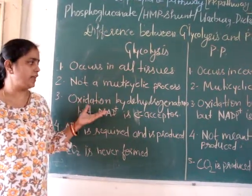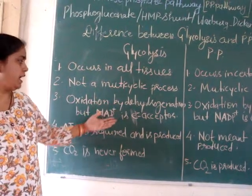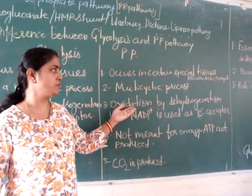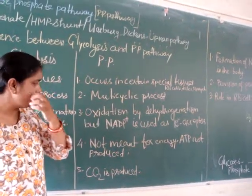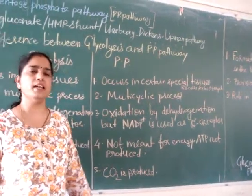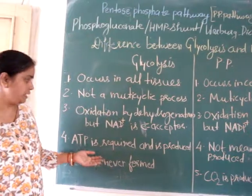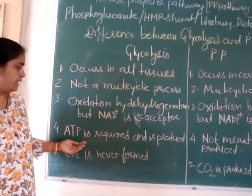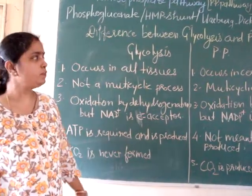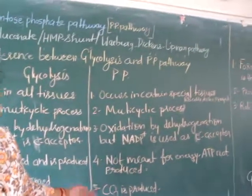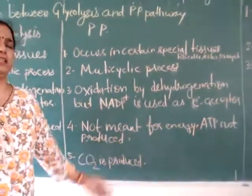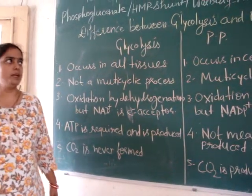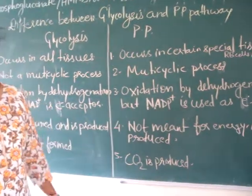In the glycolysis pathway, oxidation is done by dehydrogenation but NADP+ is used as the electron acceptor. Another important point is that in the glycolysis pathway, NADP is required and it is also produced. But in the PP pathway it is not meant for energy production — NADP is not produced. In glycolysis, carbon dioxide is never formed, but in the PP pathway carbon dioxide is produced.